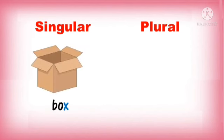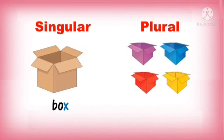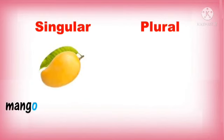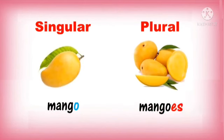Box, boxes. Es is added to the singular noun which ends in x to make them plural. Mango, mangoes. Es is added to the singular noun which ends in o to make them plural.